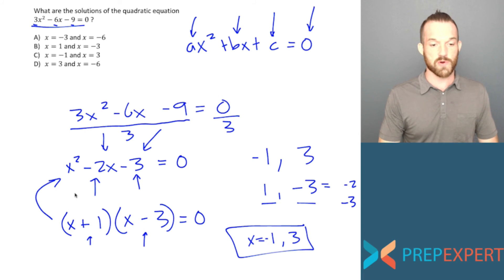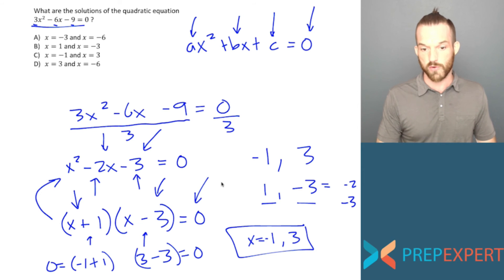Those are the values of x that would make this binomial 0, because negative 1 plus 1 would be equal to 0, and that would solve the equation. Or the second value, 3, would make this binomial equal to 0, 3 minus 3 equals 0. That would also give me an overall product of 0 and solve the equation. So my answer here is x equals negative 1 and positive 3, C.